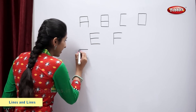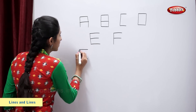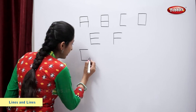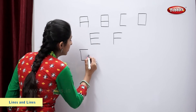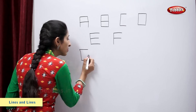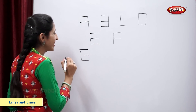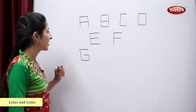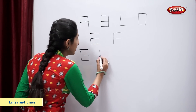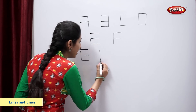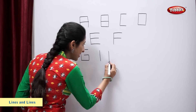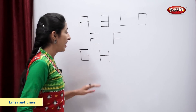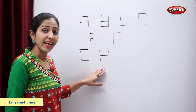Sleeping line, standing line, sleeping line, standing line. One more sleeping line — letter G. Standing line, another standing line, a sleeping line — letter H.